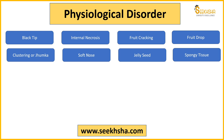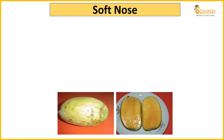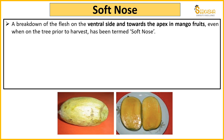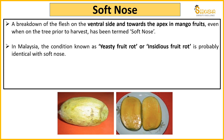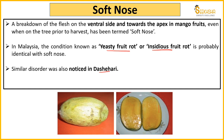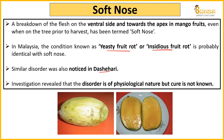Next aata hai soft nose. Yeh aapne apne gharon mein bhi dekha hoga jab aap aam khaate ho — koi baar aam kaatte ho toh aapko dikhta hai ki yahan par tip ke upar se ya side mein se woh thoda sa gala hua dikhta hai. Toh woh basically soft nose ki problem hoti hai — yeh zaadha tar sides mein ya bottom ke andar dekhne ko milta hai. Malaysia jaisi countries mein isko yeasty fruit rot ya insidious fruit rot bhi bola jaata hai. Dasheri ke andar yeh bhoat zaadha disorder dekhne ko milta hai. Is disorder ko physiological nature ka consider kiya jata hai — kisi pest se nahi ho raha, kisi virus se nahi ho raha — aur iska koi ilaj abhi tak hamaari paas available nahi hai.